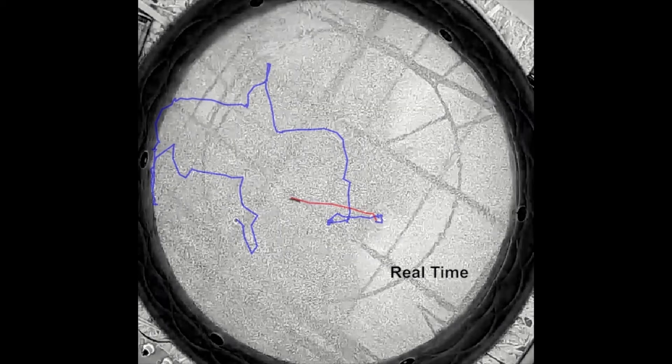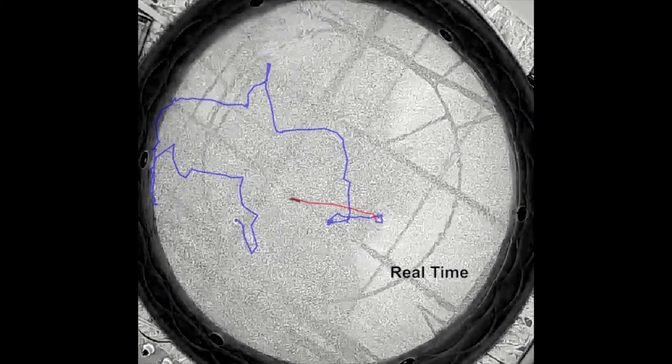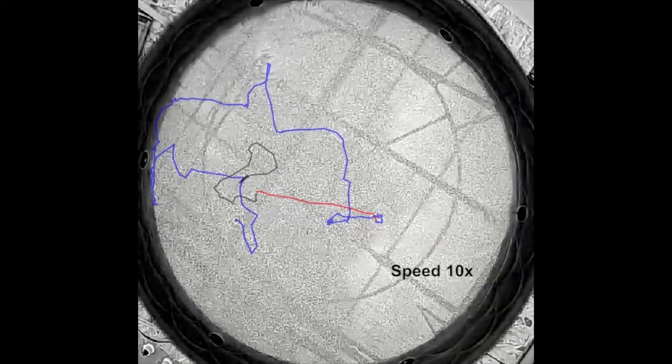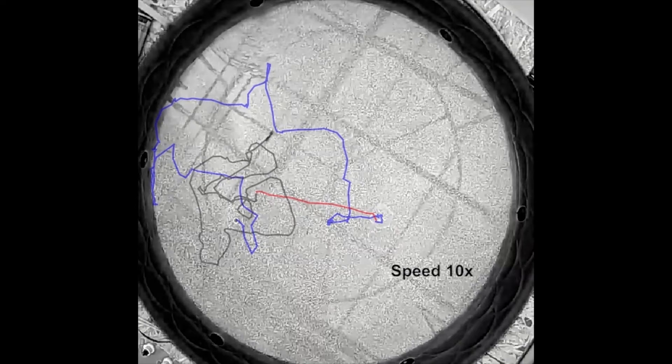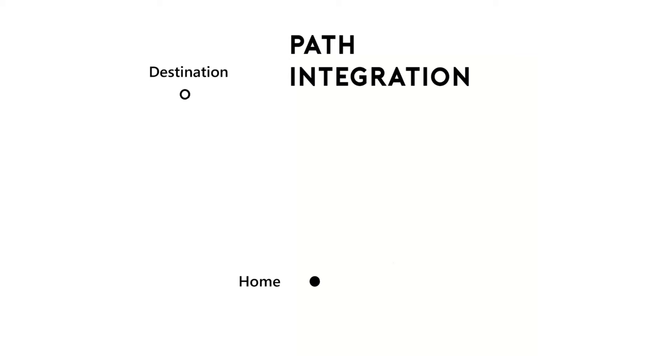Once animals located the food, they would typically make fairly straight paths to or near the location of the burrow. If their homeward paths did not lead them directly to their burrows, they would initiate a search behavior for their lost homes. We hypothesized that our mantis shrimp were able to locate their hidden homes using a navigational strategy called path integration.